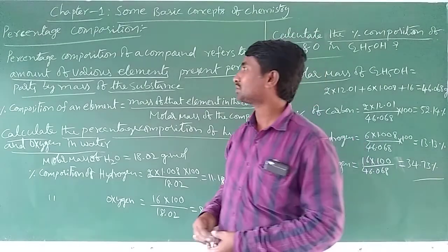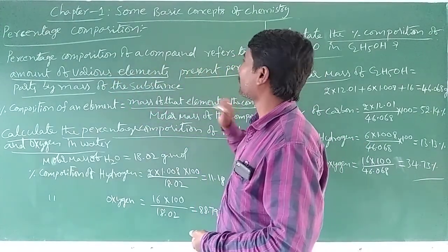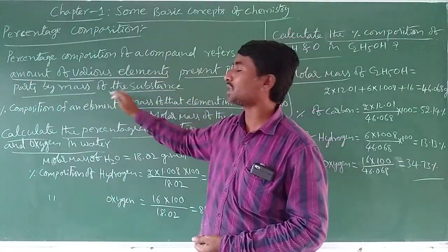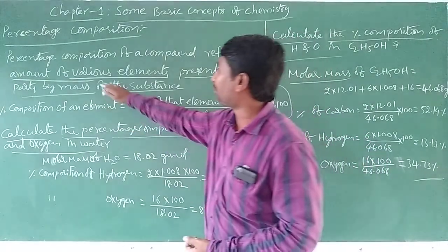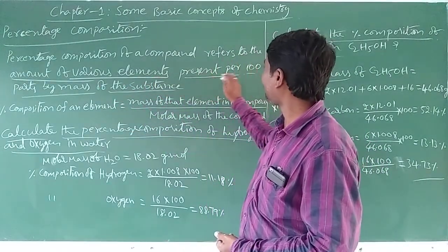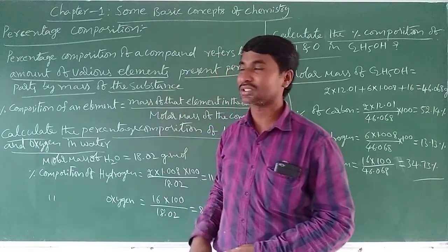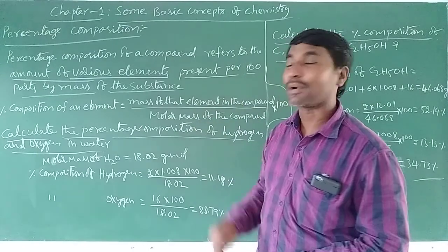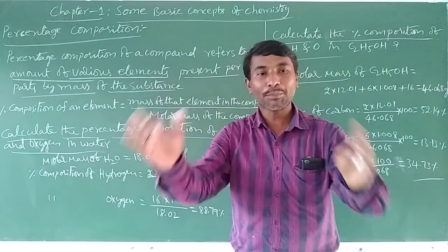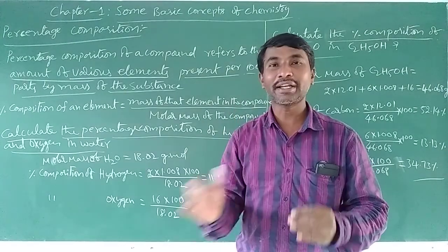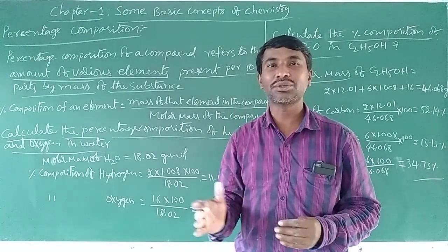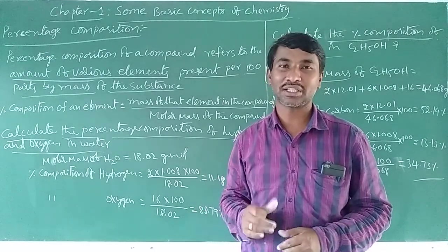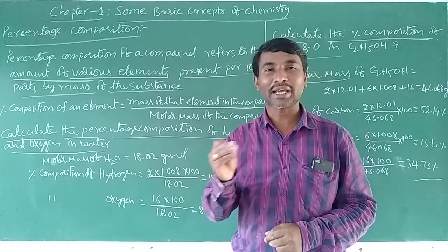What is the percentage composition? Percentage composition of a compound refers to the amount of various elements present per 100 parts by mass of the substance. This means the total compound is divided into 100 parts, and we calculate how many parts — what percentage — each constituent particle makes up.